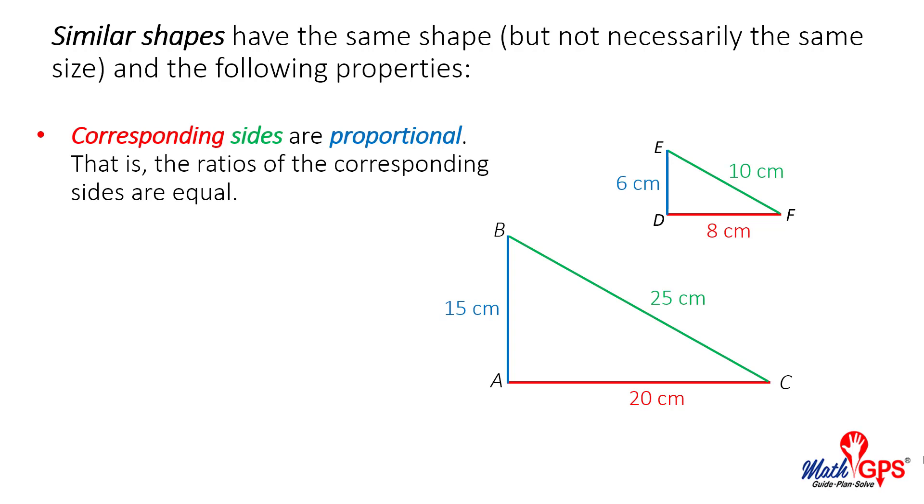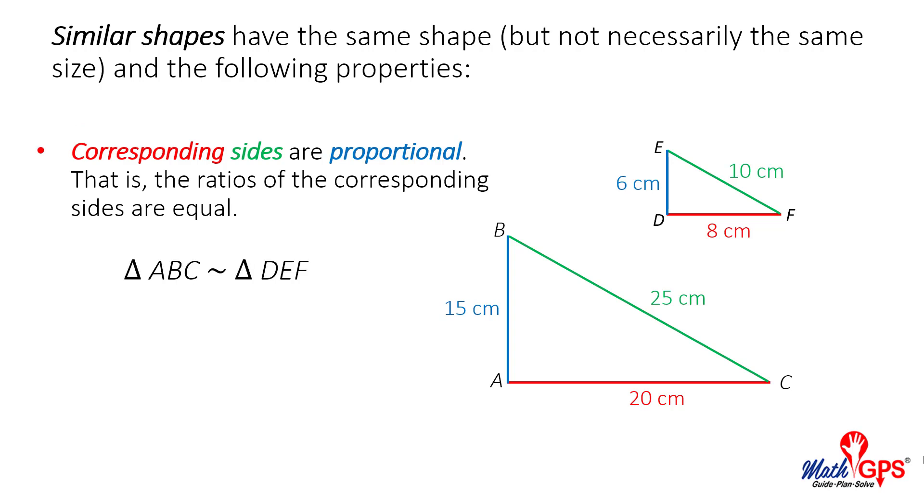Consider the two right triangles shown. They are similar. We write triangle ABC is similar to triangle DEF using the symbol for similarity.